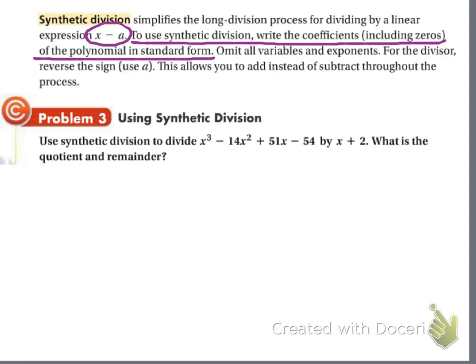It says use synthetic division to divide x to the third minus 14x squared plus 51x minus 54 by x plus 2. So here's what synthetic division does. You have what I call the box. Instead of putting x plus 2 on the outside, remember it's x minus a, that's the formula. So this is really x minus negative 2, because minus and negative is plus. So that means negative 2 is going in the box.